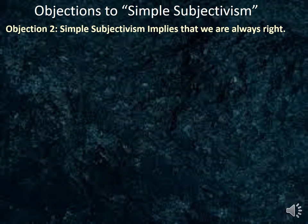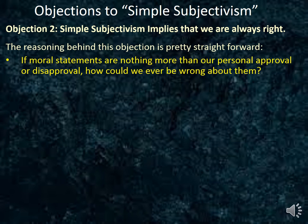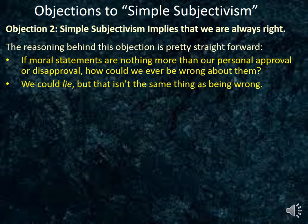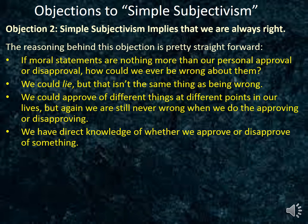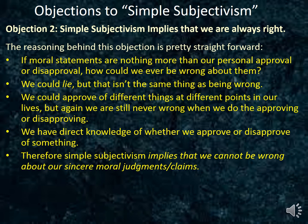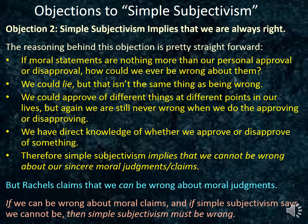Objection 2: simple subjectivism implies that we are always right. The reasoning behind this objection is straightforward. If moral statements are nothing more than our personal approval or disapproval, how could we ever be wrong about them? We could lie about whether we approve of something, but that isn't the same thing as being wrong about it. We seem to have direct knowledge of whether we approve or disapprove of something, and therefore simple subjectivism implies that we cannot be wrong about our sincere moral claims. But Rachels claims that we can be wrong about moral judgments, and that most of us take it that we can be wrong about them. If we can be wrong about moral claims and simple subjectivism says we cannot be, then simple subjectivism must be wrong.